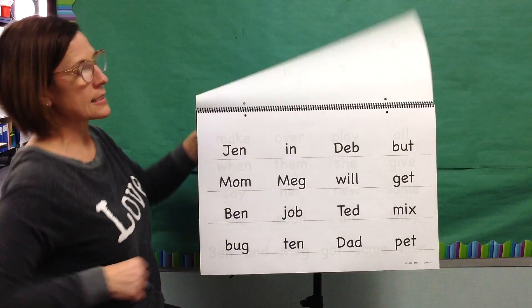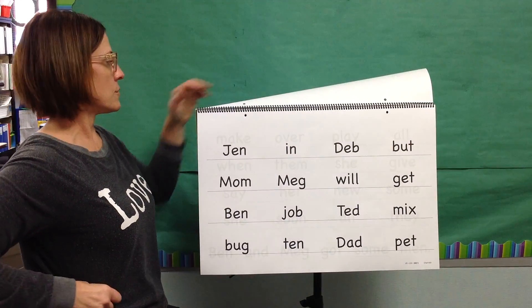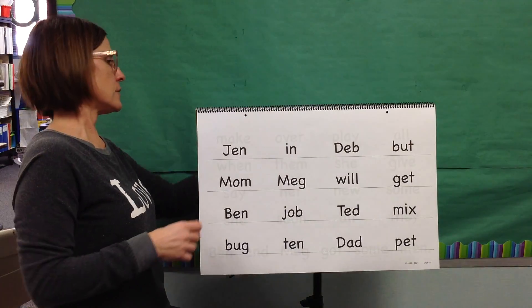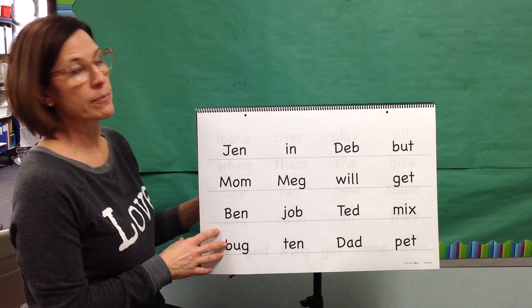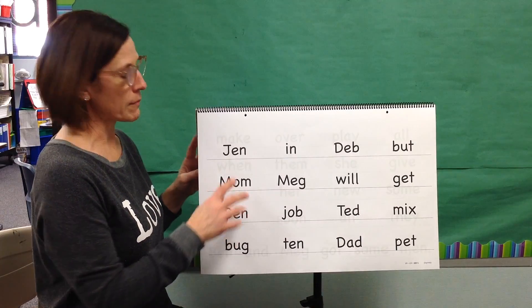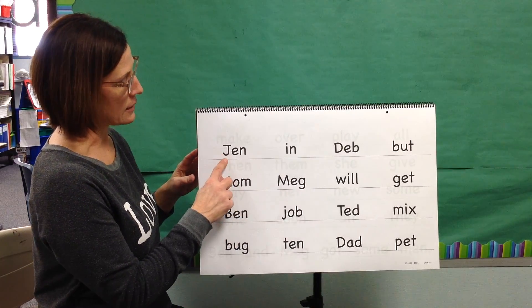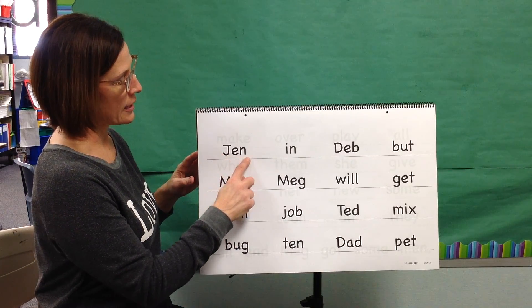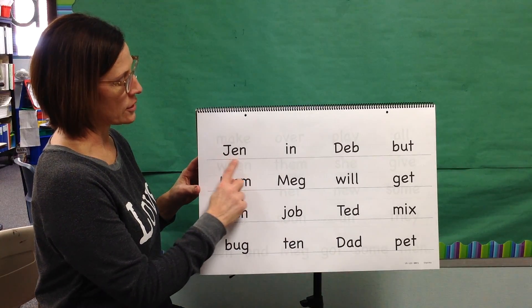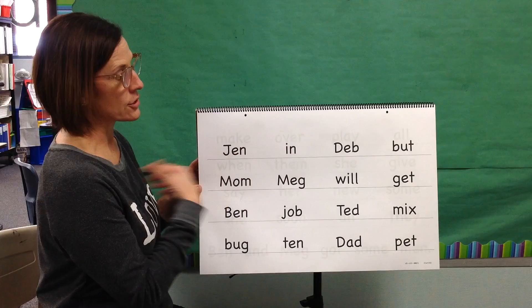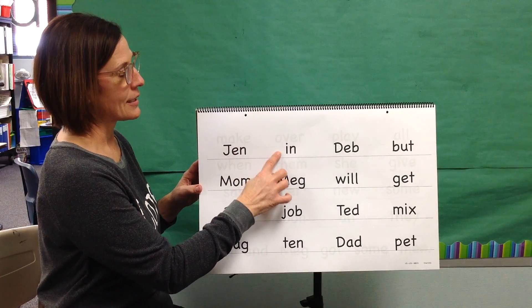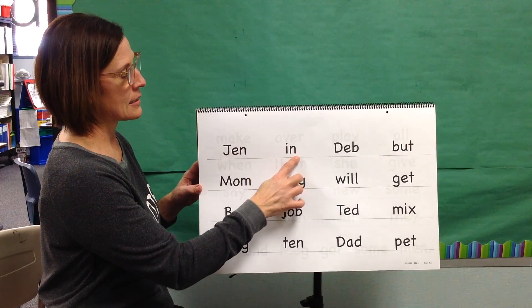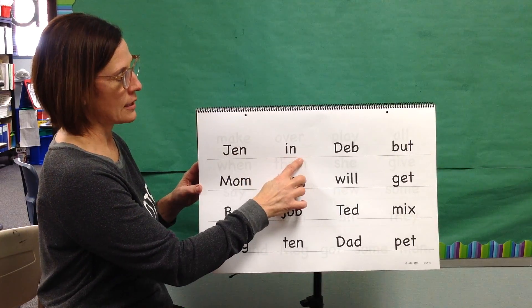Next we will blend sounds to read words. I will model the first two. My turn. Blend: Gen. Word: Gen. My turn. Blend: In. Word: In.